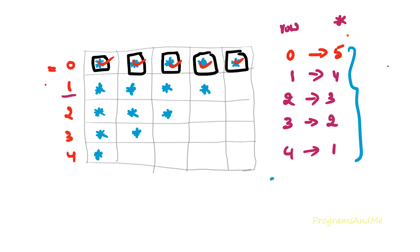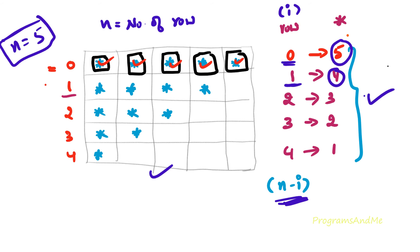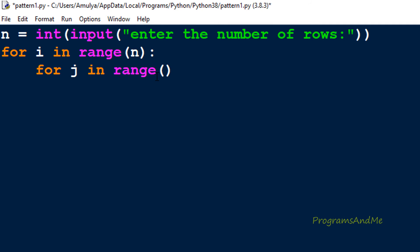To get that relationship I'll use the formula n minus i. Here n is the number of rows input — in this pattern n is 5. When i equals 0 (first row), n minus i is 5 minus 0 equals 5 stars. When i equals 1, it's 5 minus 1 equals 4 stars. This formula works correctly, so for the inner loop range I'll use range(n - i).